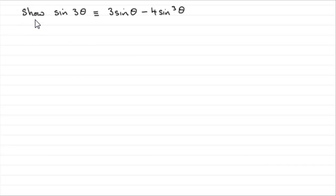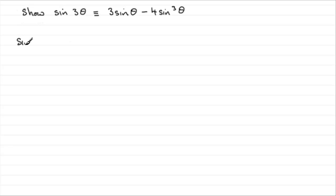Hi. What we've got to do is show that sine 3θ is identical to 3 sine θ minus 4 sine cubed θ. We start by taking sine 3θ and saying that it's identical to sine of 2θ plus θ.